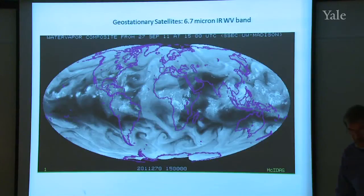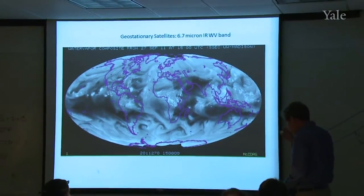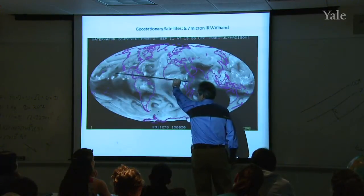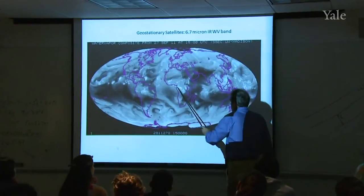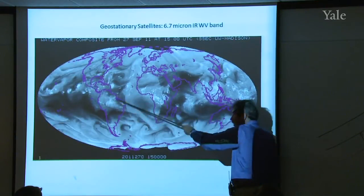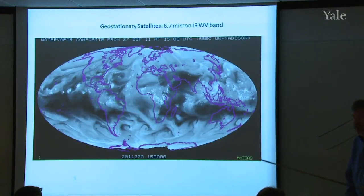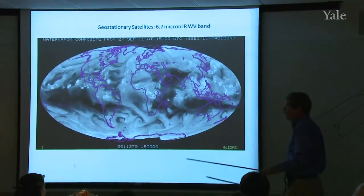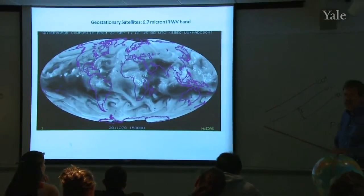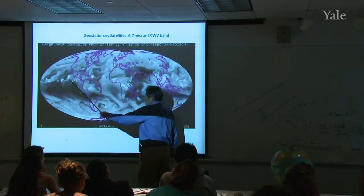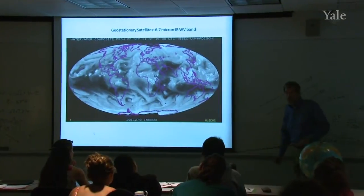Student question: The tropical rainforest like in the Amazon falls in an area that doesn't seem to have many clouds — so how does it rain so much there? Response: This is one season of the year — this one happens to be September. This belt of cloudiness over the oceans and continents is called the intertropical convergence zone, and it does move a little bit with season. You need to look at the whole year to see when it's raining there. The rainforests are connected with this belt of rain and cloudiness, but perhaps not at the exact September moment shown here.